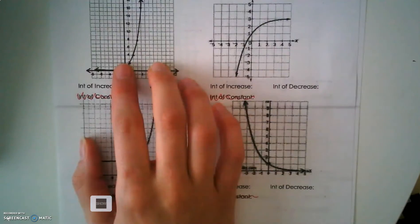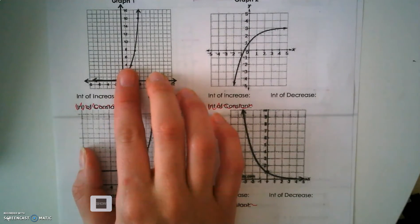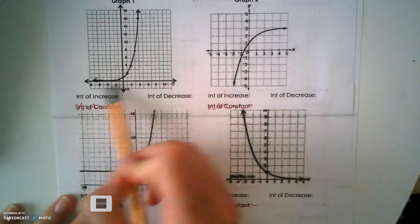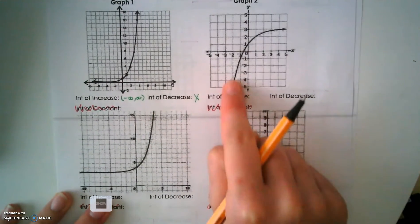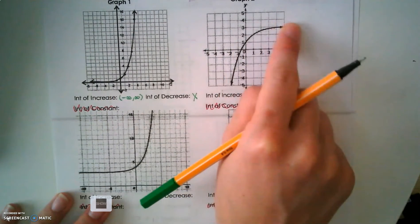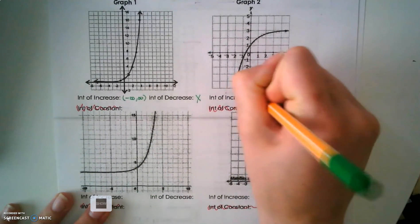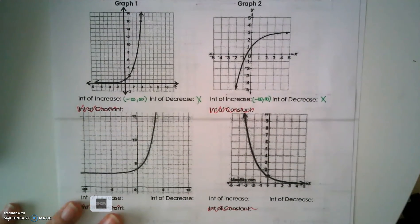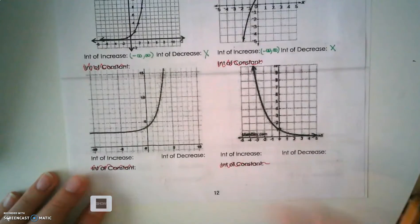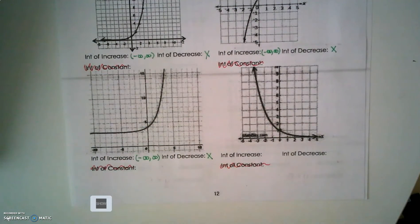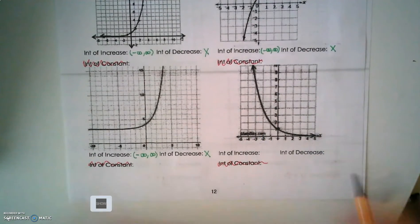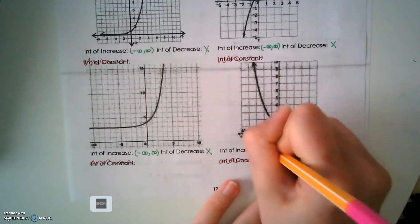Graph number one — is this an increasing or decreasing function? It's an increasing function, a growth function. So we're going to increase from negative infinity to positive infinity; the decreasing doesn't exist. The second graph is also climbing from left to right, so this is also an interval of increase from negative infinity to positive infinity. The third graph is also a growth function — negative infinity to positive infinity. The last graph is falling down — that's a decreasing function, so it cannot be increasing.